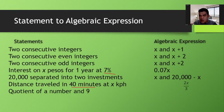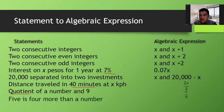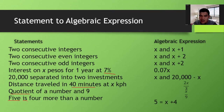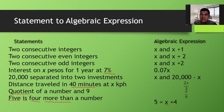'The quotient of a number and nine' — the keyword here is quotient, so that gives us x over 9. 'Five is four more than a number' — if the number is x, the word 'is' means equals, and 'four more than x' means x plus 4, so the expression is: 5 = x plus 4.